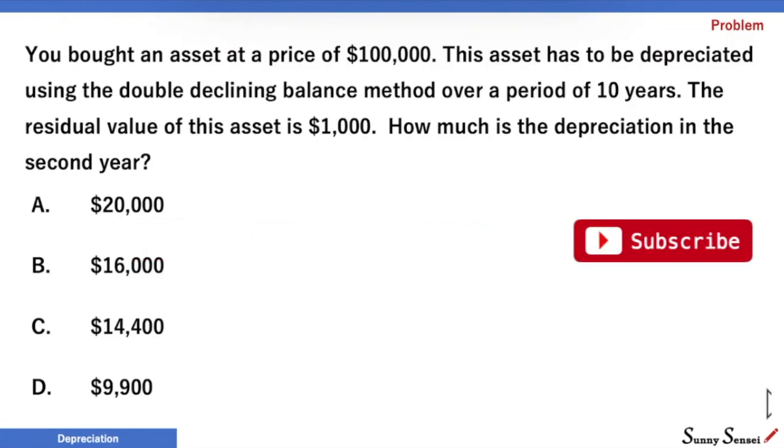Next, we move to the sample problem. You bought an asset at a price of $100,000. The asset has to be depreciated using the double declining balance method over a period of 10 years. The residual value of this asset is $1,000. How much is the depreciation in the second year? A. $20,000. B. $16,000. C. $14,400. D. $9,900. Please pause the video and try this problem.